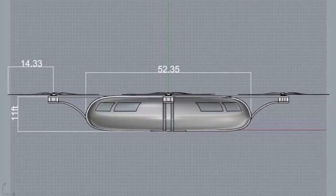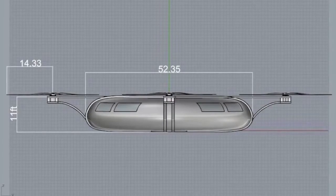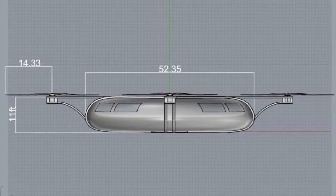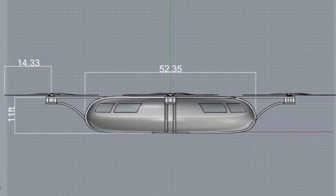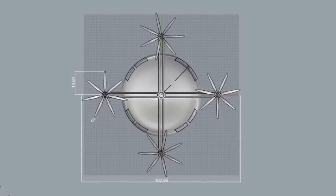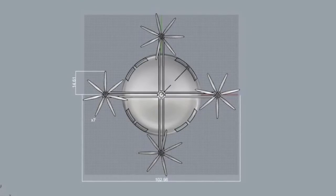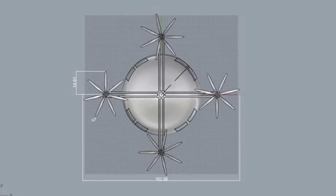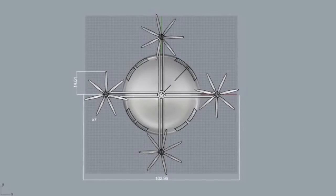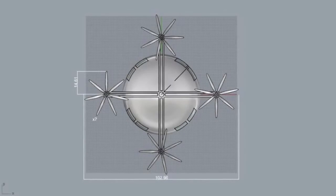We used the computer-aided drafting software called Rhino to develop a model of the full-scale vehicle. The mission capability, vehicle weight, and rotor characteristics, such as diameter and number of blades, were results of an iterated solution from the NASA Design and Analysis of Rotorcraft Sizing Tool.